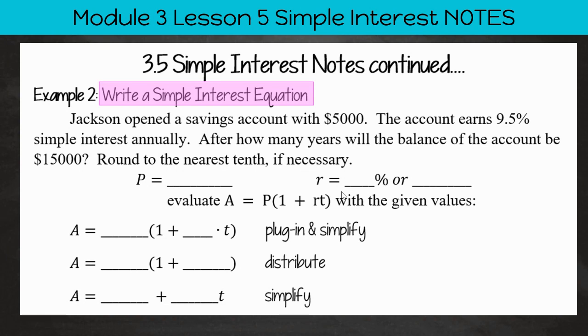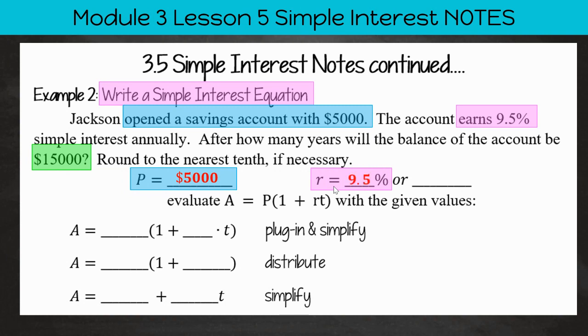Jackson opened a savings account with $5,000. The account earns 9.5% simple interest annually. After how many years will the balance of the account be $15,000? Round to the nearest tenth if necessary. So P here is $5,000. That's the principal amount that Jackson is going to invest in his savings account or place in his savings account.